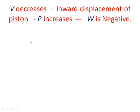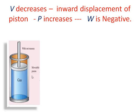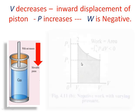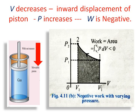Similarly, if volume decreases — to decrease the volume of the gas, we must apply a force causing inward displacement of the piston. There will be a decrease in volume and an increase in pressure. In this case, the volume changes from V1 to V2 (V2 < V1) and pressure increases from P1 to P2. The area under the curve will be less than zero — the work done is negative. In this way, we can explain negative work done from the PV diagram.